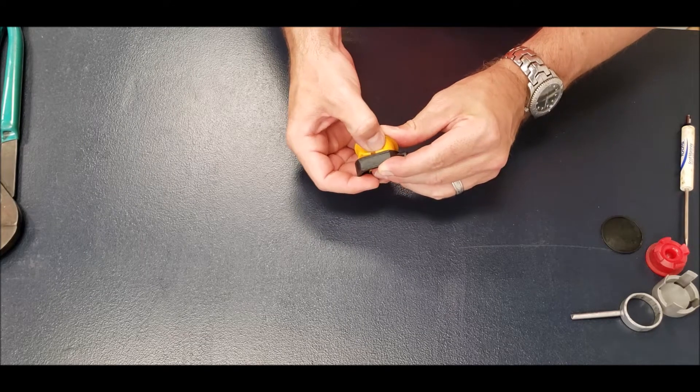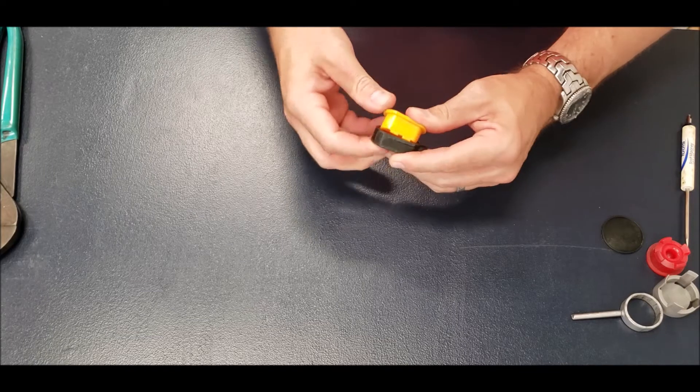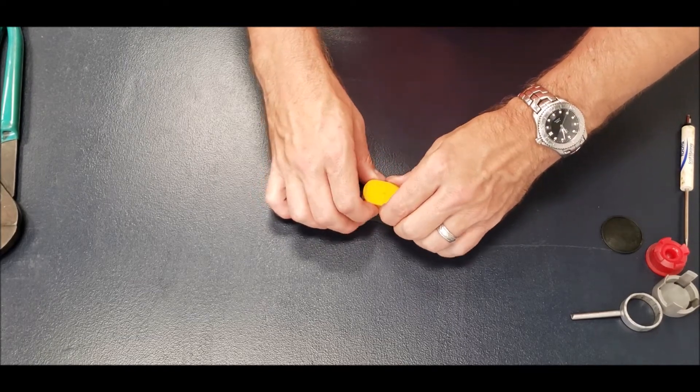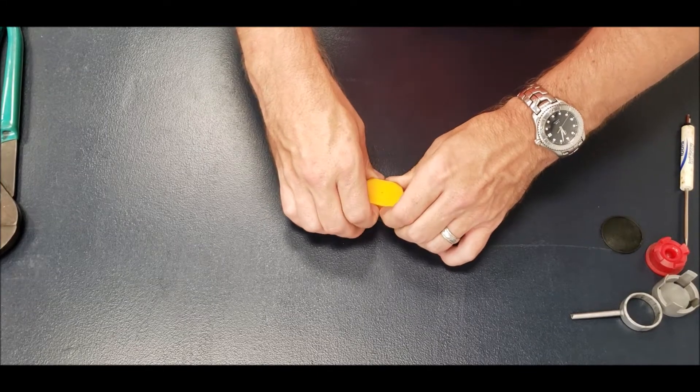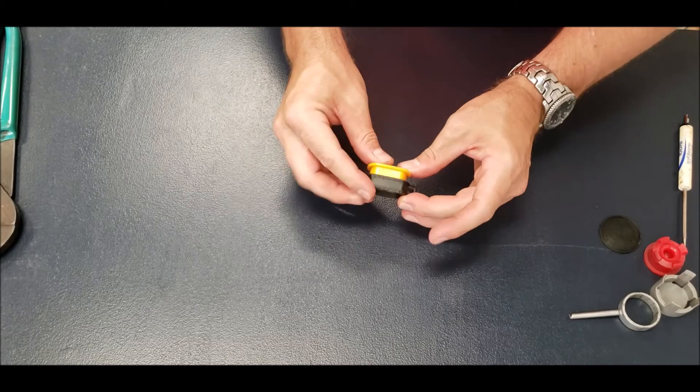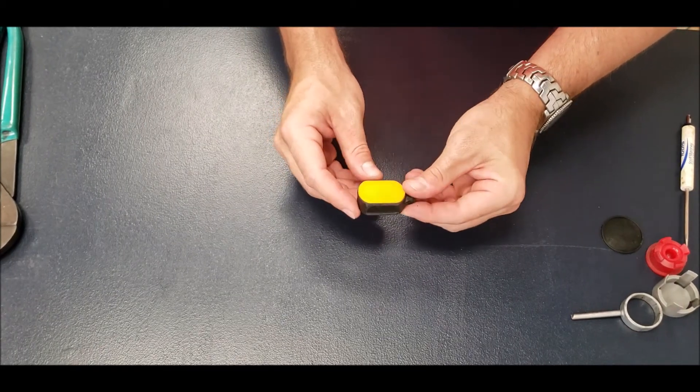You can use your finger to depress the tangs, and it helps if you put it on a hard surface or something that will hold it still. Once you've got them slightly depressed and it starts to push in, you can push it in evenly, push it all the way through until those tangs engage on the other side.